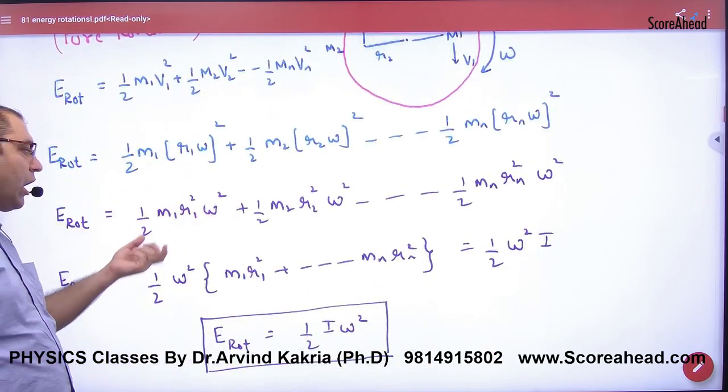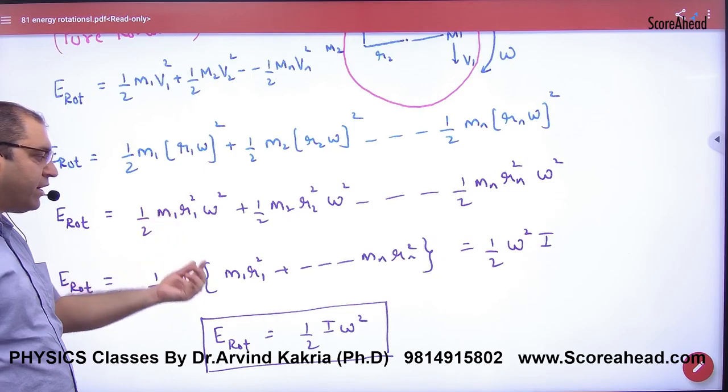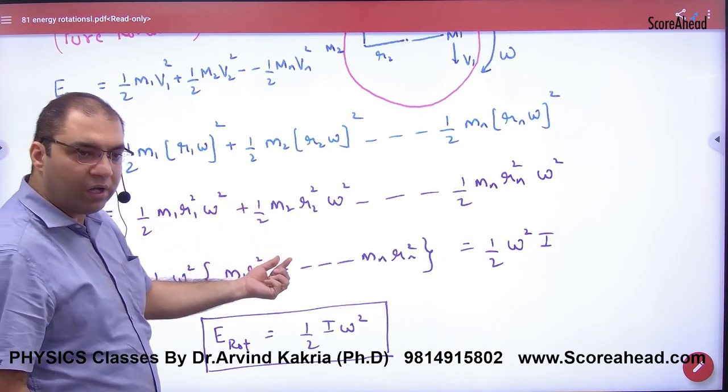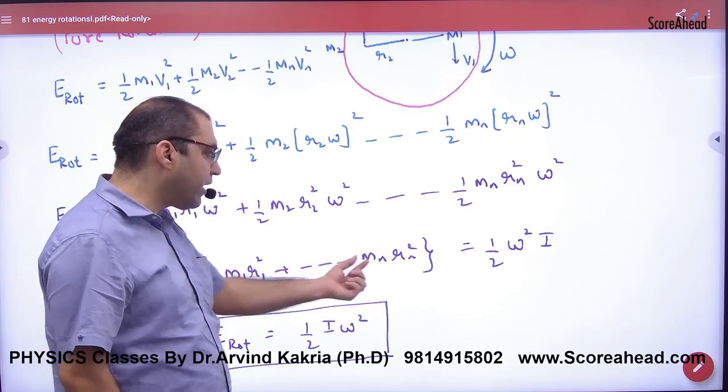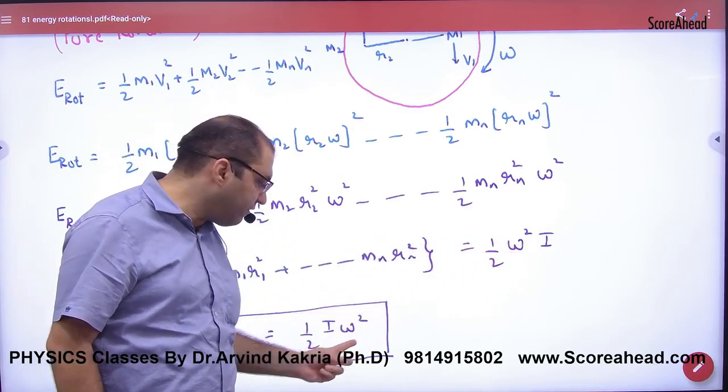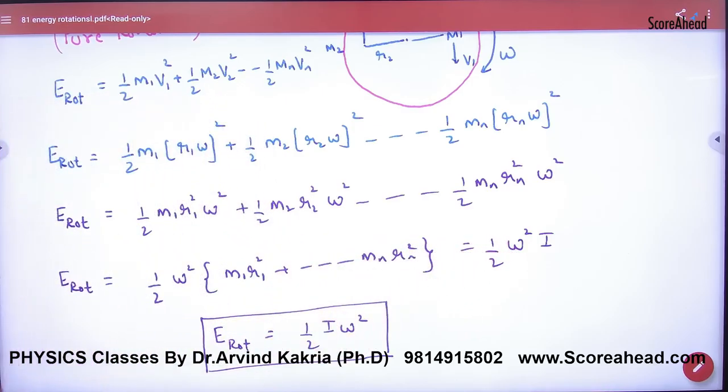By squaring here, take a common half and omega square. What will happen? M1 R1 square, M2 R2 square, Mn Rn square. And what do they say? Moment of inertia I. So, this formula has become half I omega square.